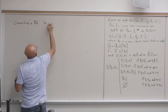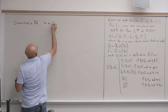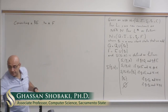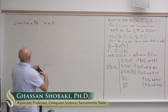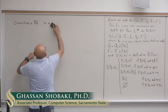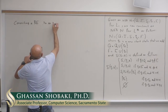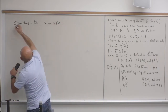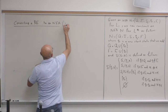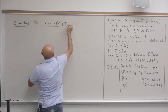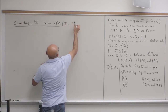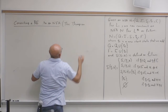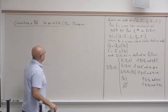Converting to a finite automaton, or specifically an NFA. This procedure is called the Thompson procedure, or the Thompson construction.